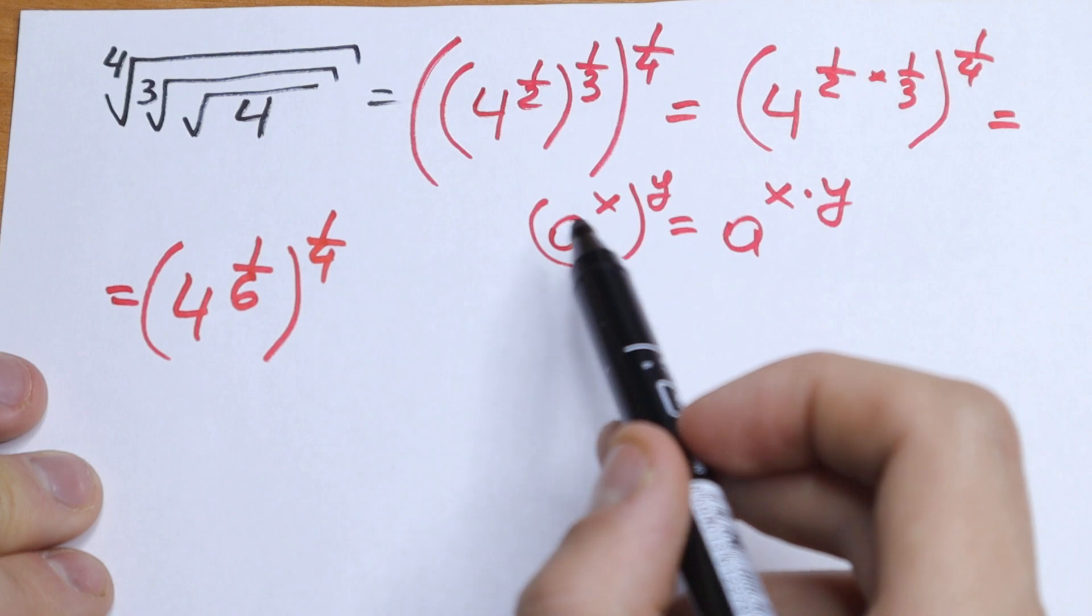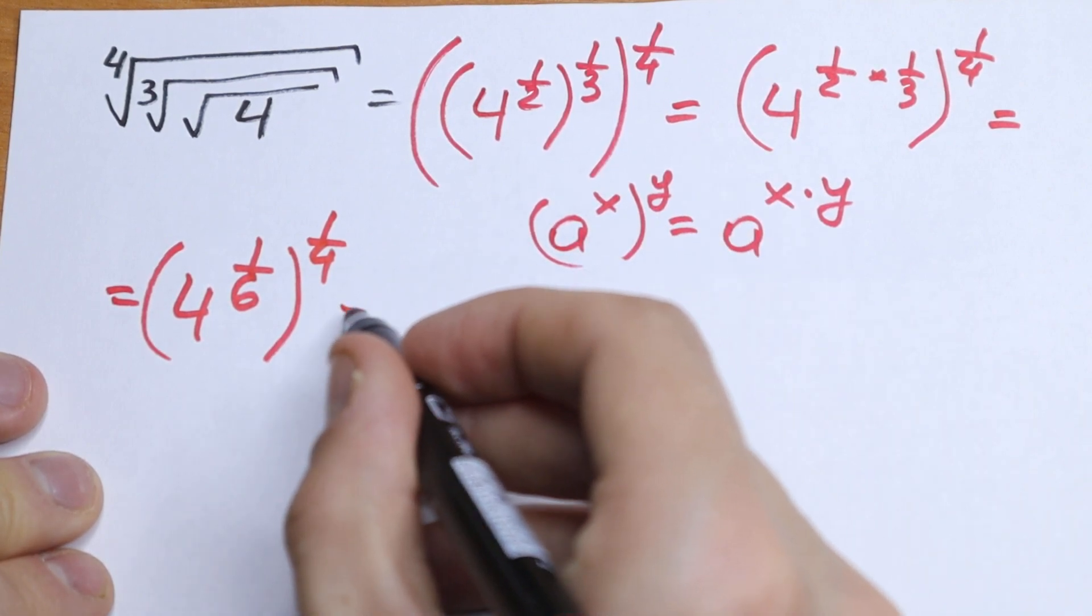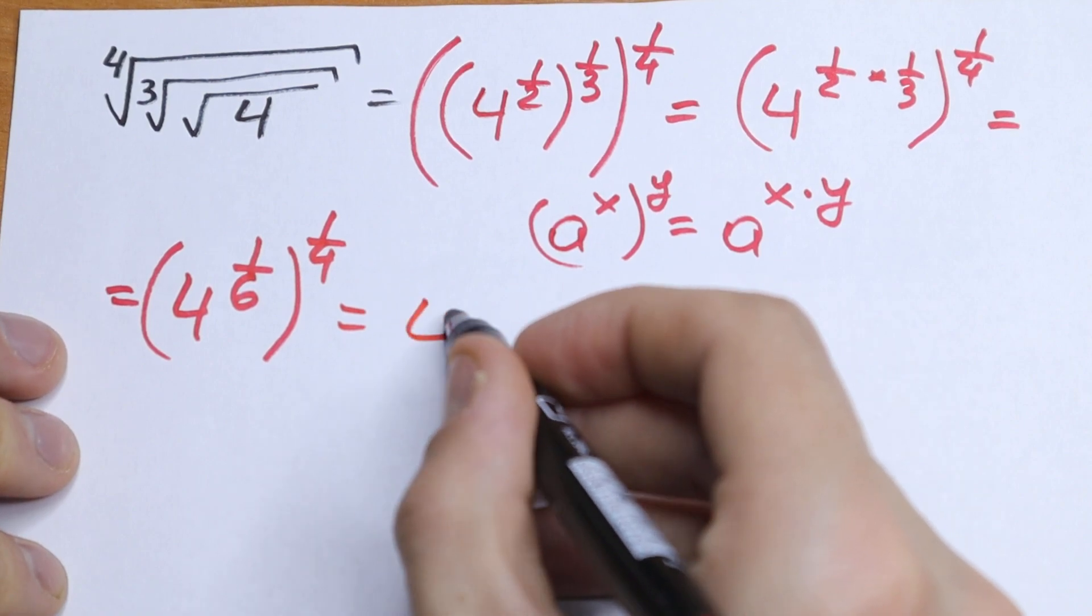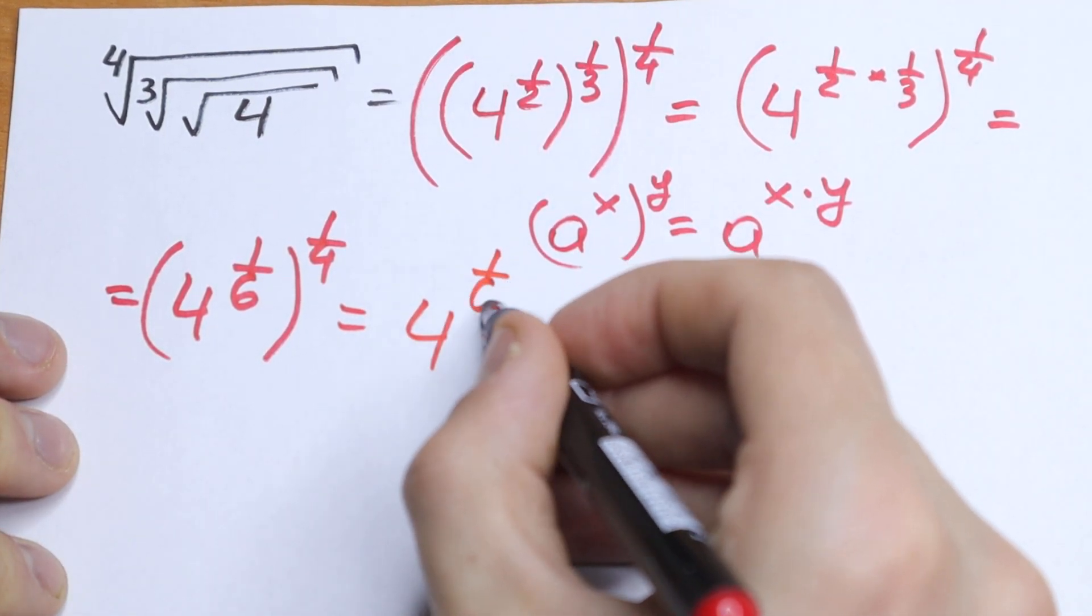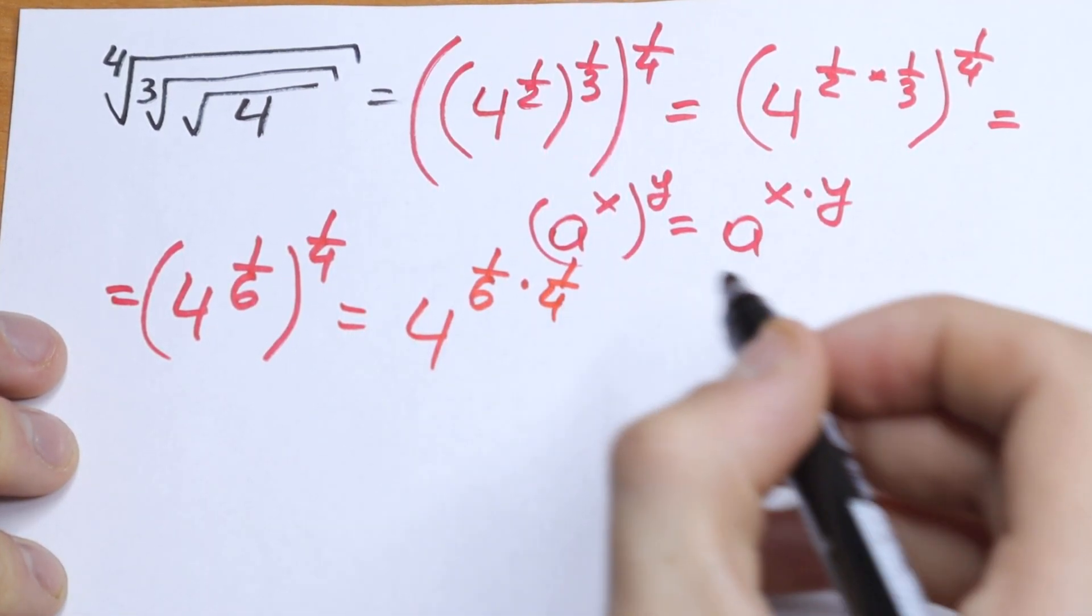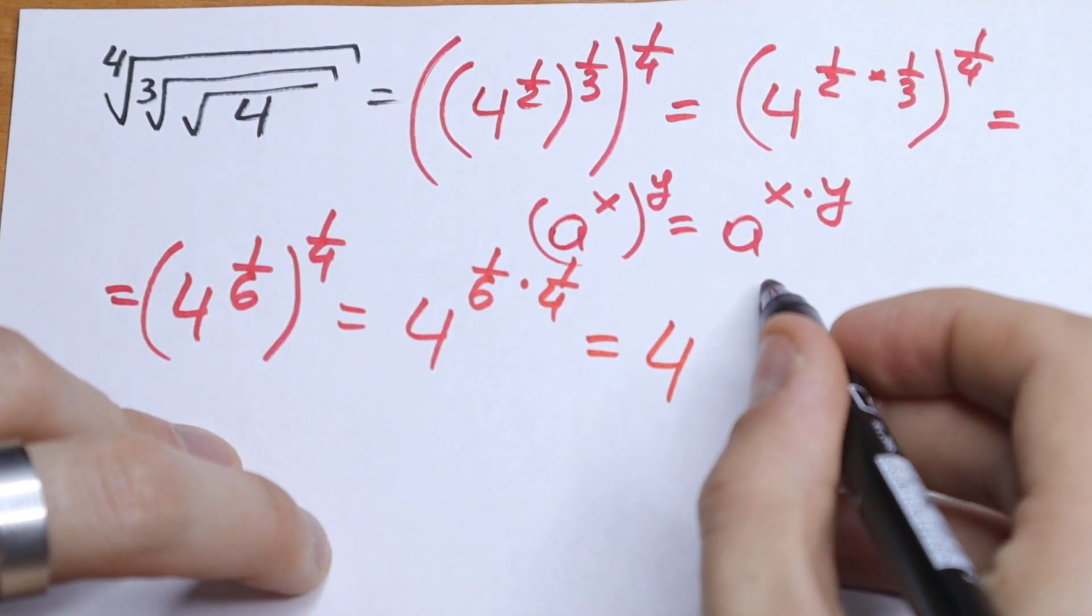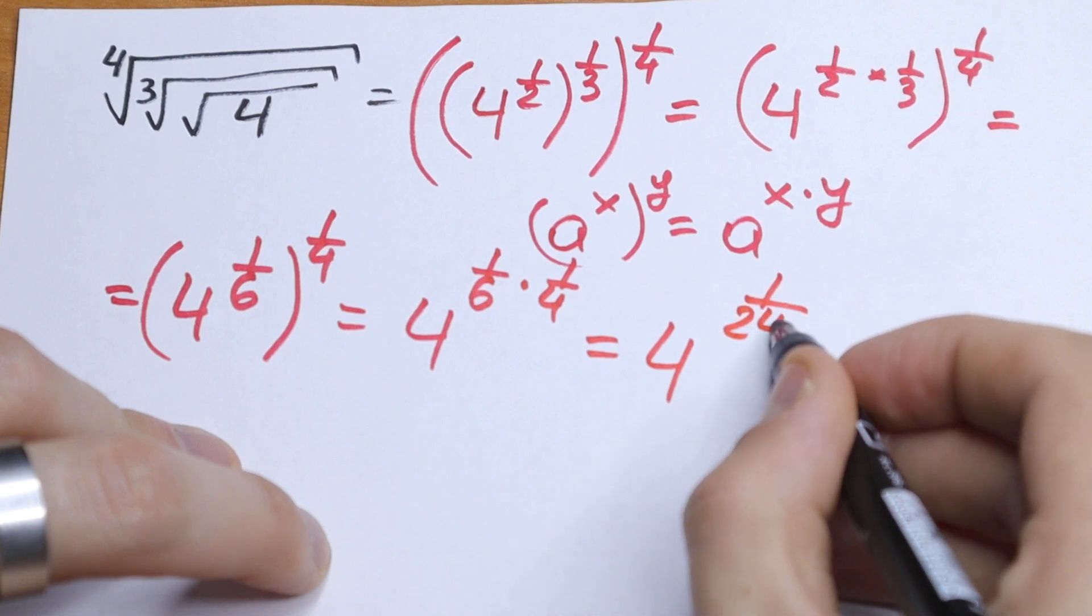Let's use this rule, let's apply this rule once more. What we will have? We need to multiply our powers. We will have 4 to the power one sixth times one fourth. And it's not hard to think that this will be equal to 4 to the power one over twenty-four.